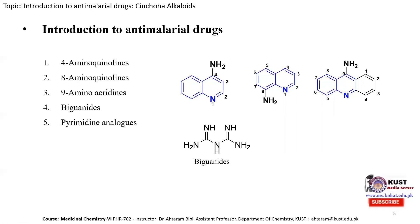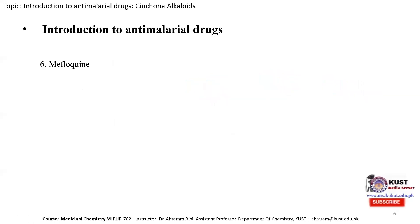The fifth class is pyrimidine analogues. When pyrimidine is substituted at positions 2, 4, 5, and 6 with various substituents, we obtain different analogues with good anti-malarial activity. The next class is mefloquine, whose structure also consists of the basic quinoline unit.